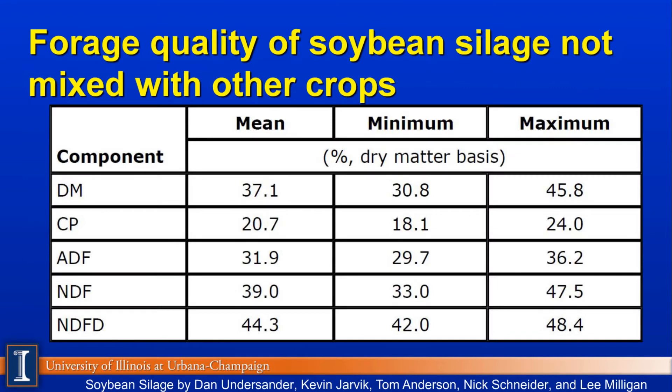This simply shows, again from the Wisconsin researchers, the range of qualities — the range in dry matter, crude protein, ADF, NDF, and NDF digestibility. That NDF digestibility number catches my eye as a little lower than expected compared to other legume crops. The fiber isn't quite as digestible, but big ranges are certainly driven by the maturity of the crop. Under drought conditions, these numbers can be quite variable.